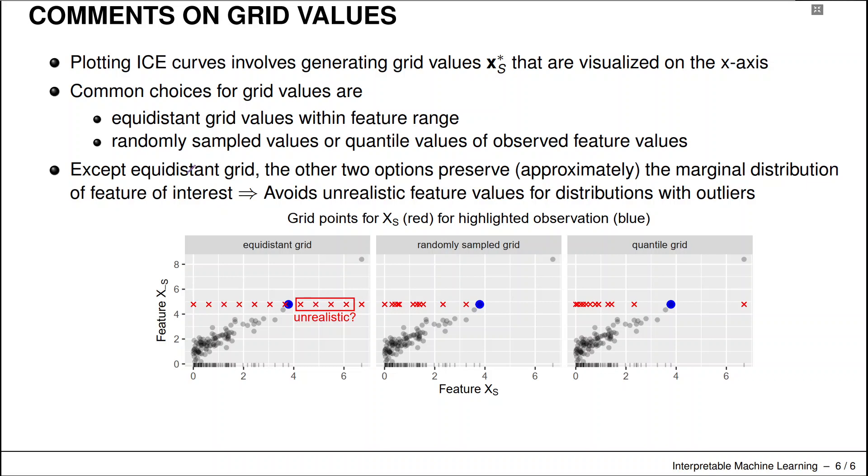Except for the equidistant grid, the other two options preserve approximately the marginal distribution for the feature of interest, so they might be a little more reasonable. They avoid unrealistic feature values for distributions with outliers.